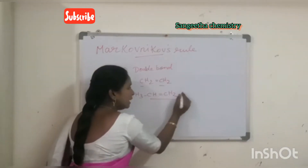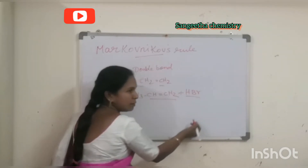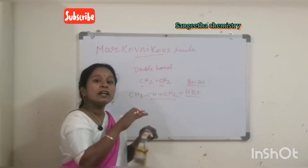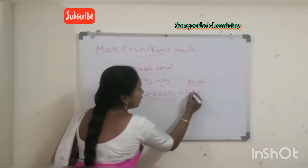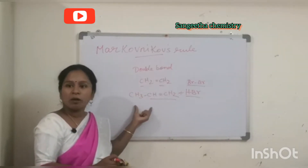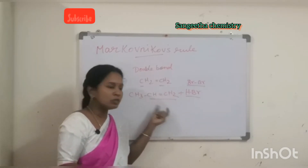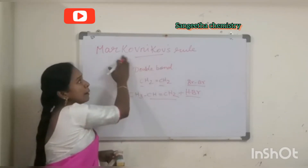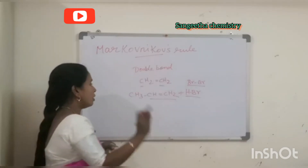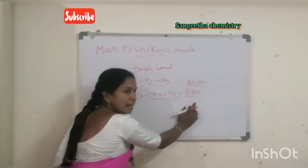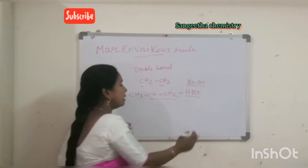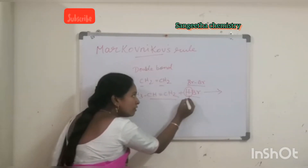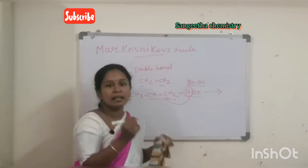When an unsymmetrical alkene reacts with an unsymmetrical reagent — for example, HBr, where H and Br are not the same — the hydrogen of the reagent is going to bond with the double-bond-containing carbon which contains the highest number of hydrogen atoms.